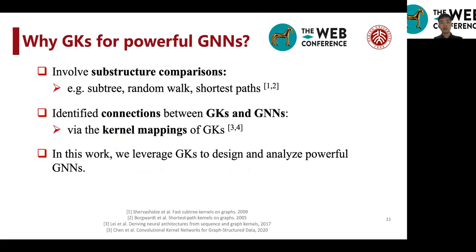So here comes the question, why do we use graph kernels for powerful graph neural networks? Well, there are many different reasons for that. But two key reasons are that graph kernels inherently involve comparisons between substructures.